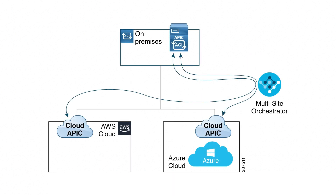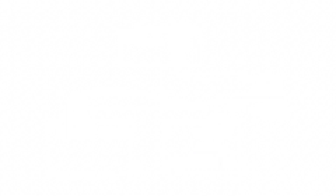You can use the Cisco ACI multi-site orchestrator to establish connectivity in several ways. You can have connectivity between an on-premises site to a single cloud site, which is known as hybrid cloud, or you can have connectivity between an on-premises site to multiple cloud sites, which is known as hybrid multi-cloud. For both of these types of connectivity, the cloud site can be either Microsoft Azure or AWS public cloud sites.